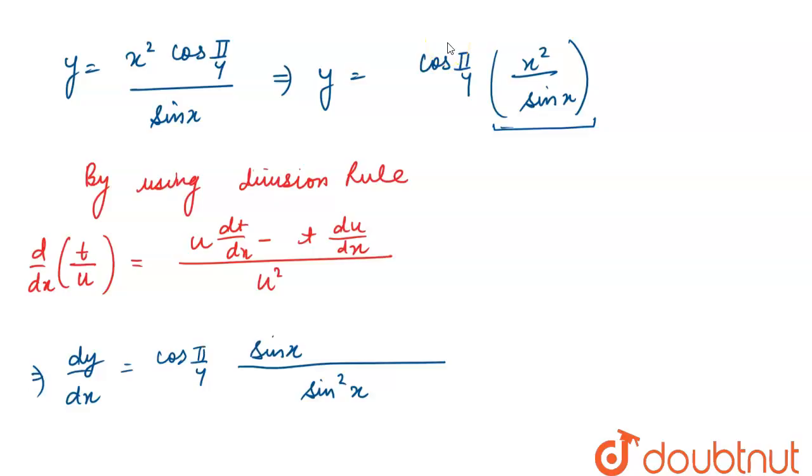Differentiating the numerator, we know that differentiation of x to the power n is n × x^(n-1).